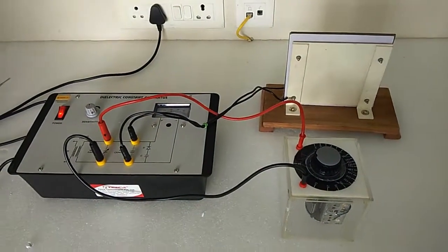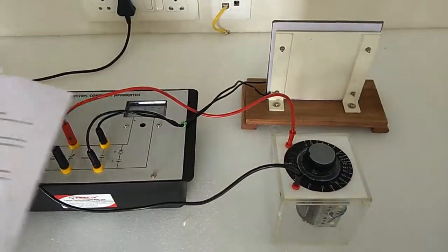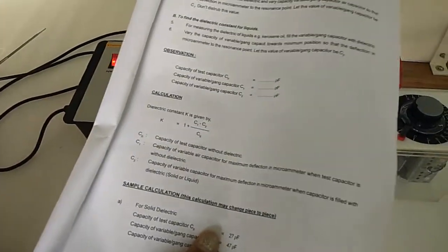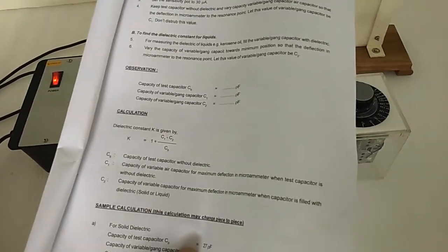So this will be c2 and the c1 is which we received from earlier. Using this formula k equals to 1 plus c1 minus c2 by c0, we can get the dielectric constant.